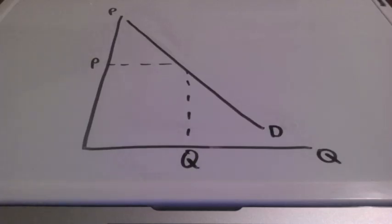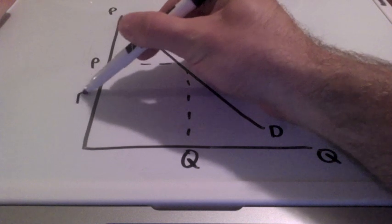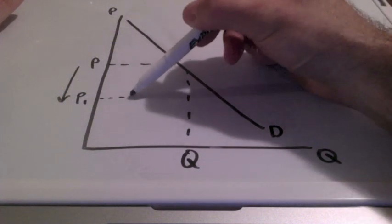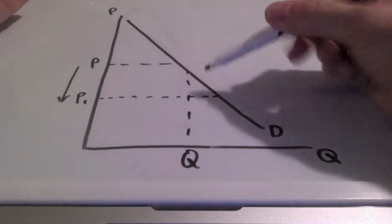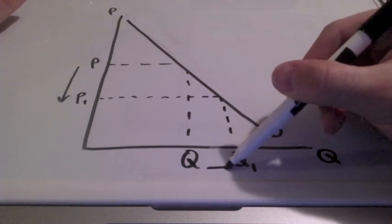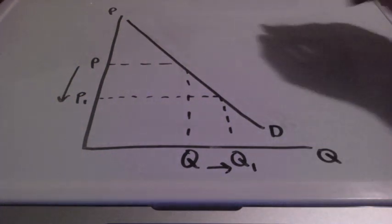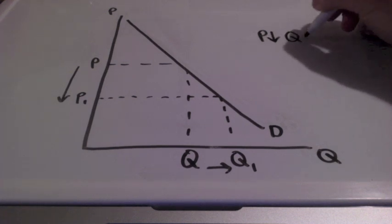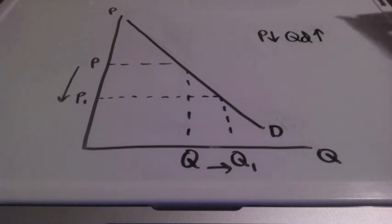So we previously stated that the demand curve is downward sloping because there is an inverse relationship between price and quantity. If prices go down from P to P1, our quantity demanded will increase from Q to Q1. So the law of demand states that when prices go down, quantity demanded will go up. As you can see, there is a clear inverse relationship between price and quantity demanded.